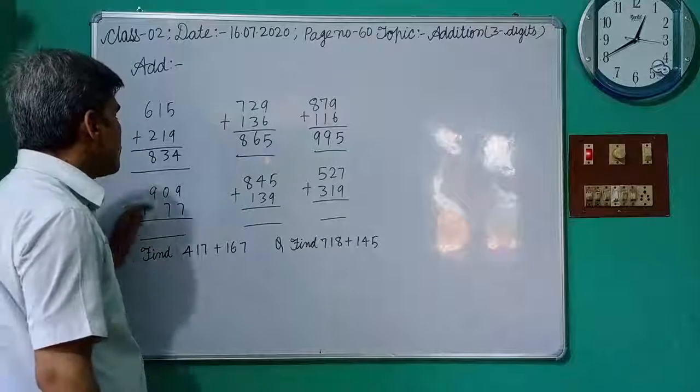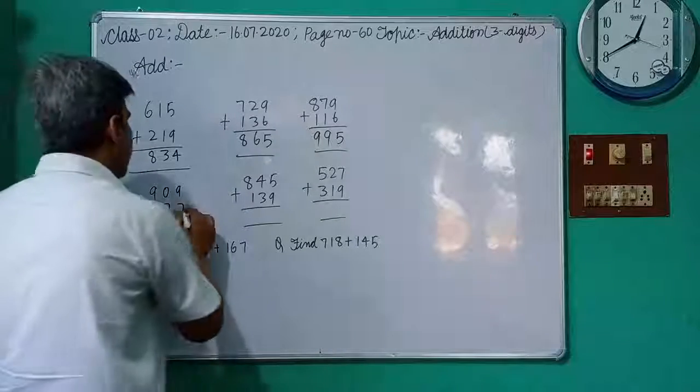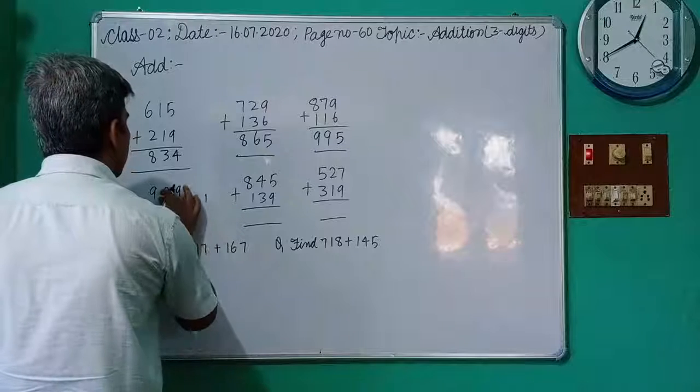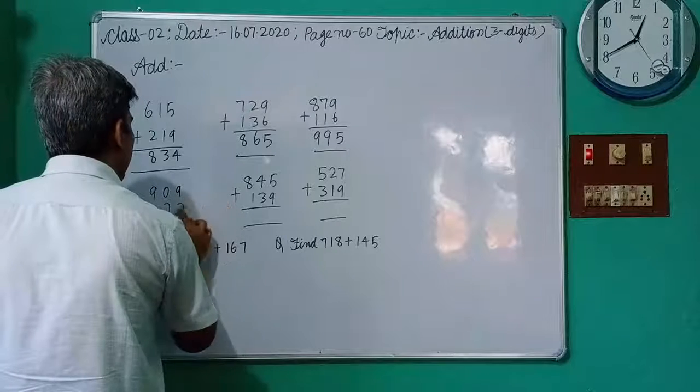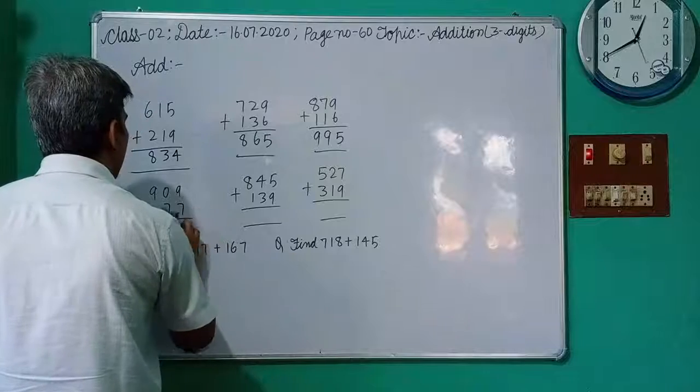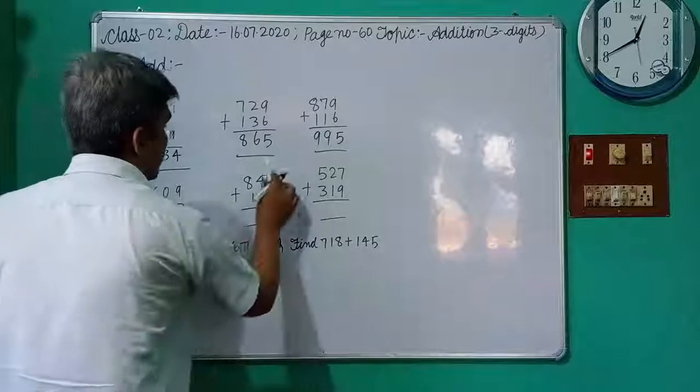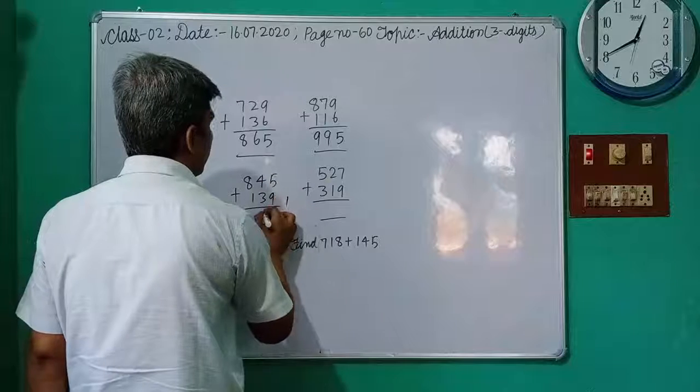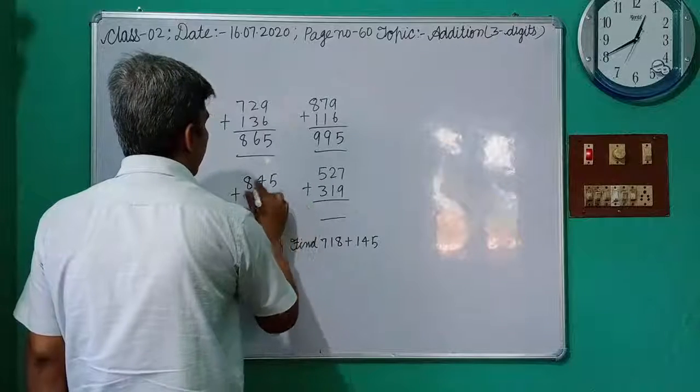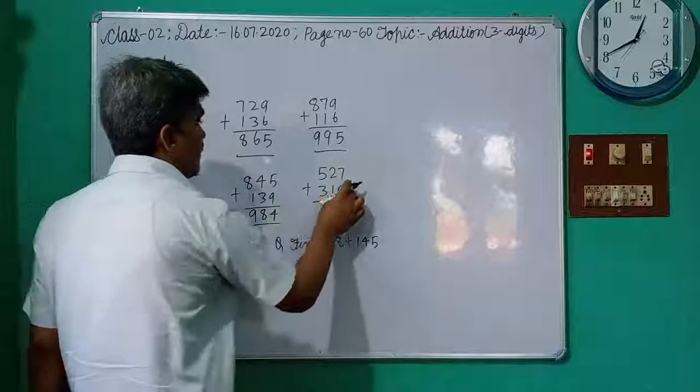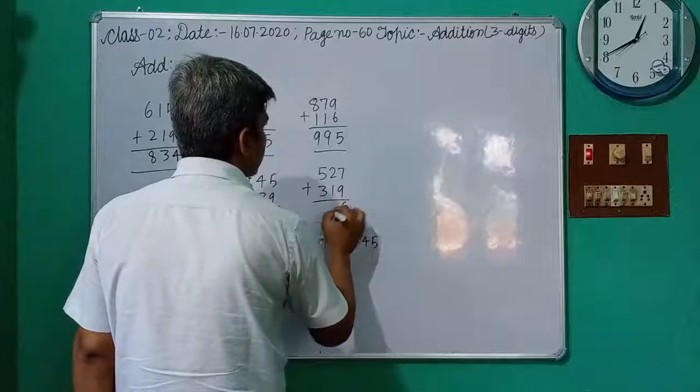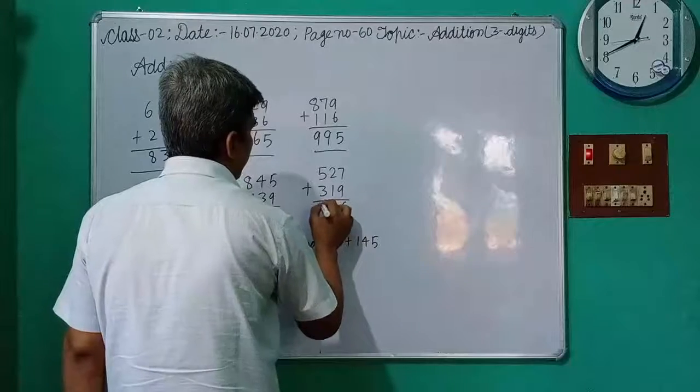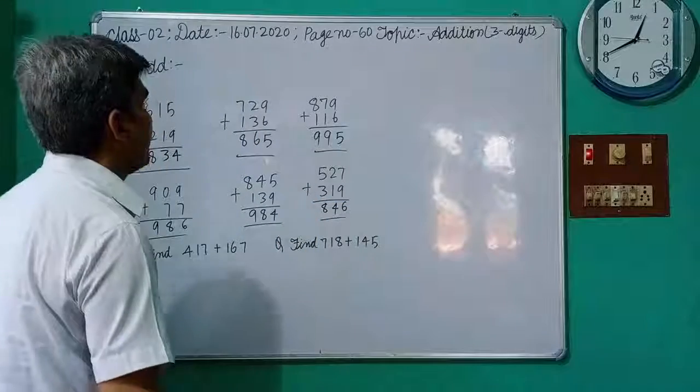Now 909 plus 70. 9 plus 7 is 16. Here write down 6, 1 is left. 7 plus 0 is 7, plus 1 is 8. Here write down 8, and 9. Next: 995 plus 514. 9 plus 5 is 14. 4, 1. 4 plus 3 is 7, 1 plus 8 is 8. And 8 plus 1 is 9. 9 plus 7 is 16. 6. 2 plus 1 is 3, 1 is 4. 5 plus 3 is 8. Now in this way you add.